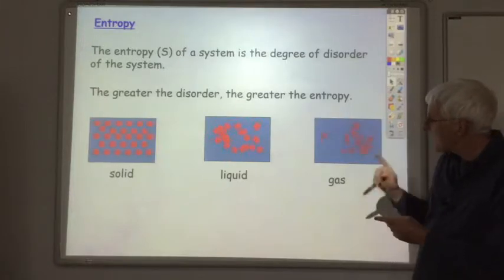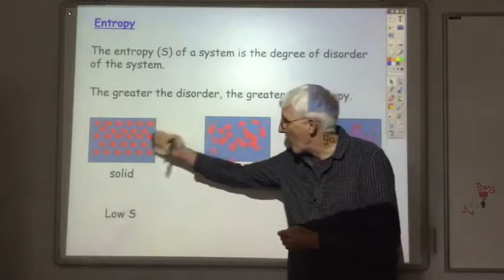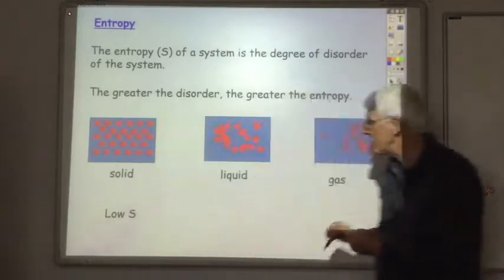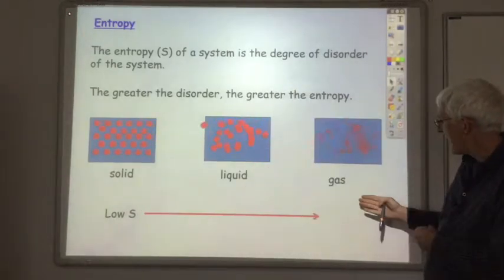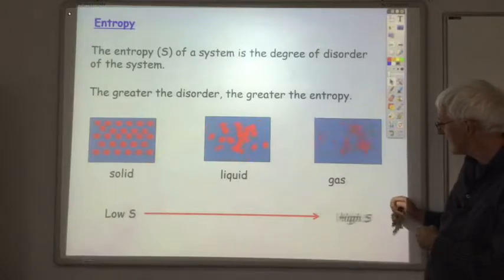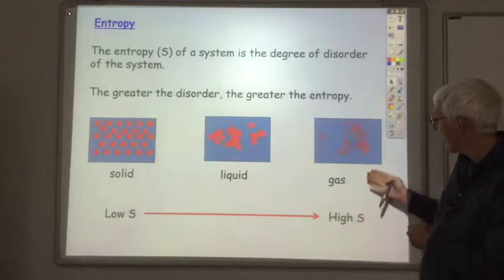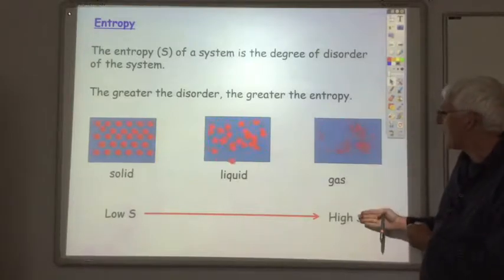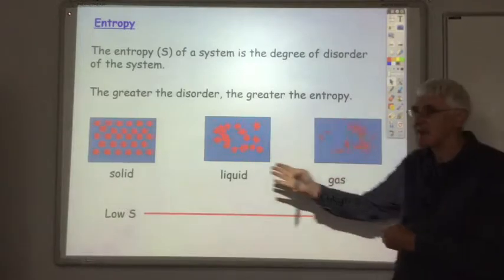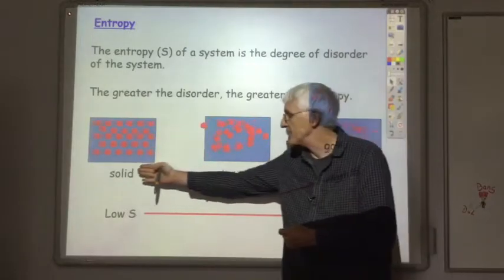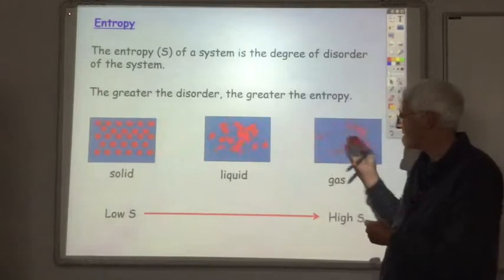So at the solid, we've got a lot of order, so we've got low entropy. And the gas, we've got very high disorder, so high entropy. So we get this increase in entropy as you go from a solid through to a liquid through to a gas.